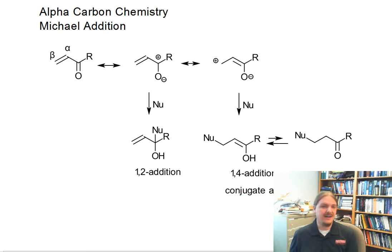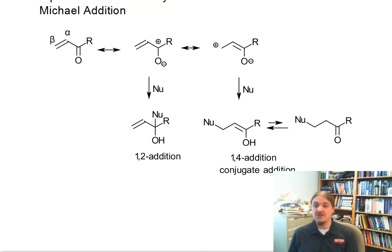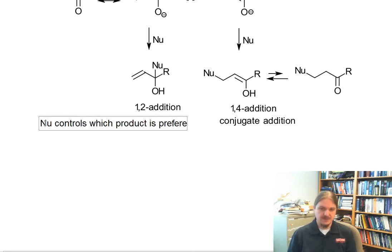When you talk about dienes, you can control which addition occurs electrophilically based on temperature because one is thermodynamic and the other is kinetic. There's maybe some argument for this here, but actually it turns out that the identity of the nucleophile controls the identity of the preferred product.